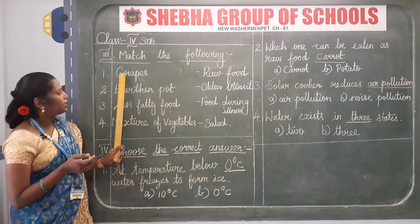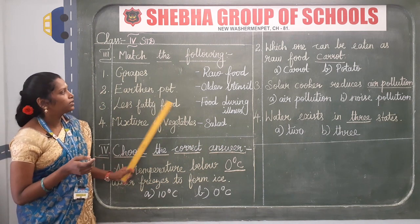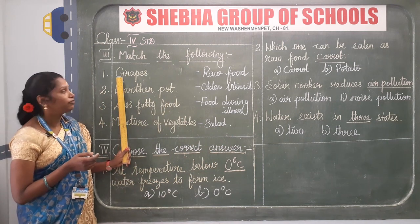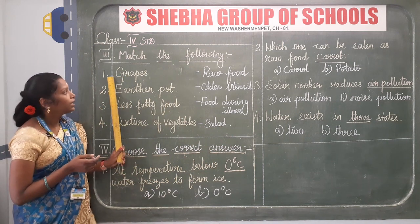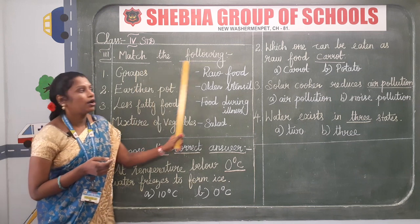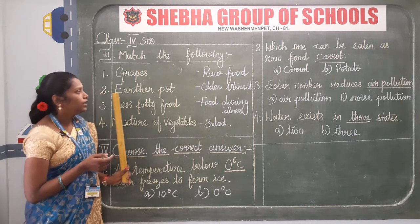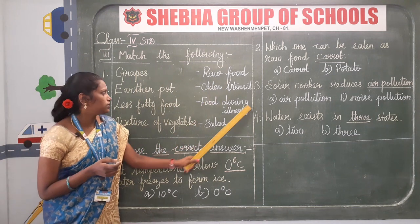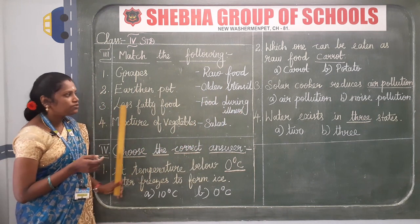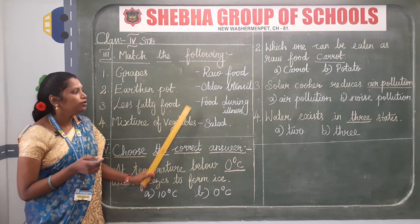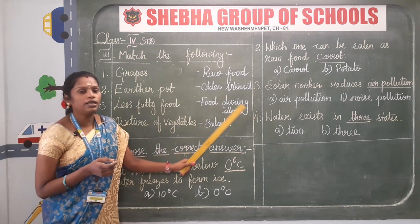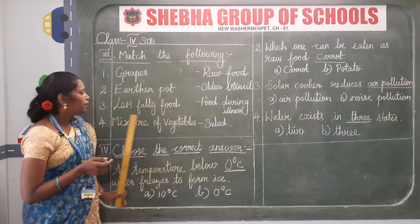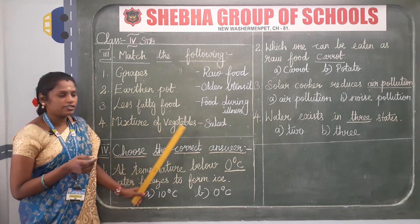Once again, listen carefully children: grapes — raw food; earthen pot — olden utensil; less fatty food — food during illness; mixture of vegetables — salad.